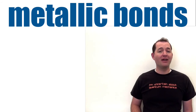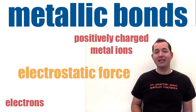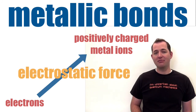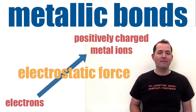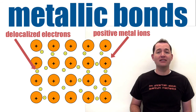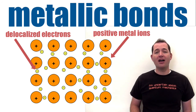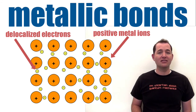Metallic bonds are formed by the electrostatic force between electrons and positively charged metal ions. In these bonds, the electrons are delocalized, or free to move. The sharing of these free electrons among the positively charged metal ions constitutes the metallic bond.